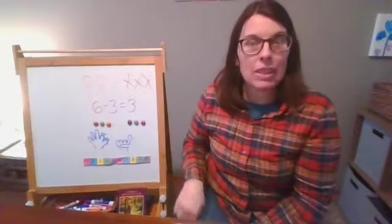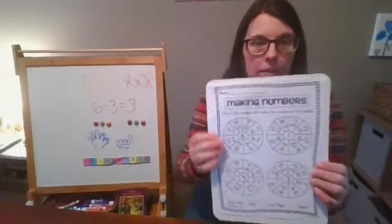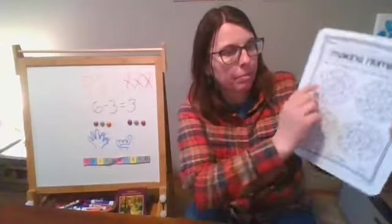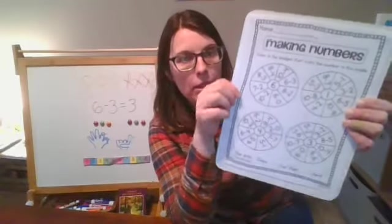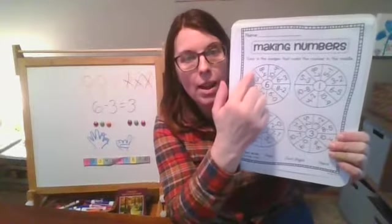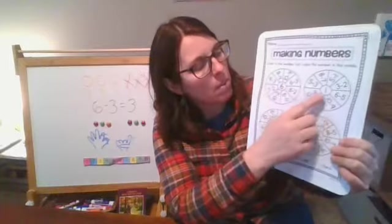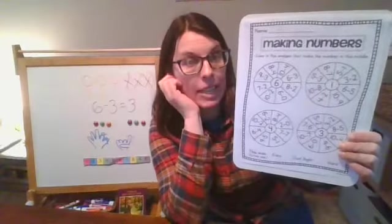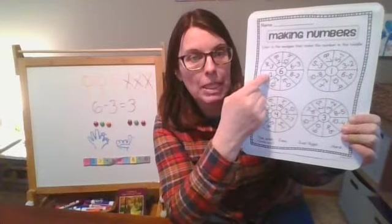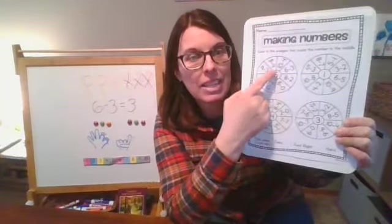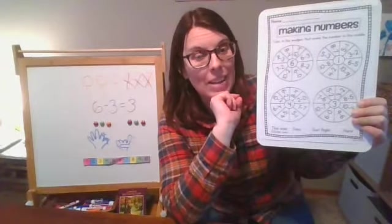Okay, so you can use any of those today when you're working on this paper. This is called making numbers. It says here, color in the wedges that make the number in the middle. So there's a bunch of subtraction around the outside. Your job will be to solve that. And if the number that's in the middle is the answer, then you're going to color in that little piece of the pie. If it's not the answer, then don't color it in. And go on to the next one.